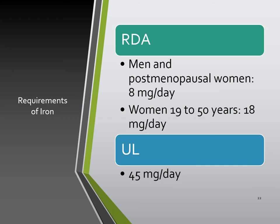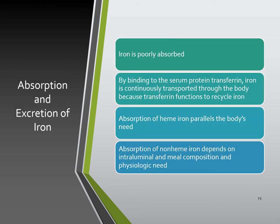When a cell dies, iron is recycled, being released and transported to various storage sites to be used again via the serum protein transferrin. Iron is very poorly absorbed and continuously transported through the body as transferrin functions to recycle it. Absorption of heme iron parallels the body's needs; absorption of non-heme iron depends on intraluminal factors, meal composition, and physiologic needs.